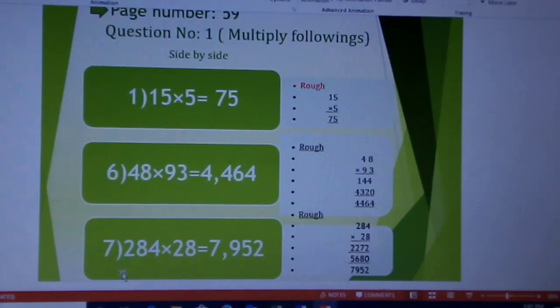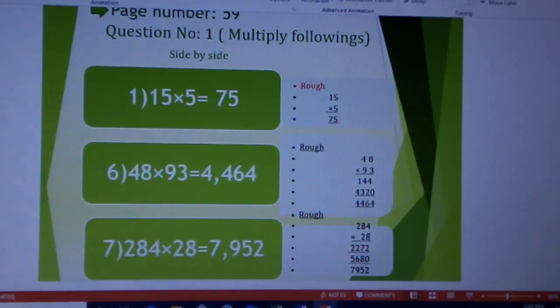Now number 7: 284 multiply 28 = 7952. At first, 284 multiply with 8. 8 multiply 4 = 32. 2 in the ones place and carry it 3. Now 8 multiply 8 = 64 and 64 plus carry 3 = 67. 7 in the tens place and carry it 6.